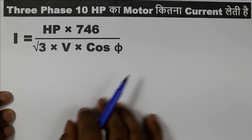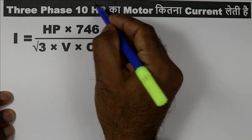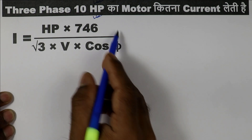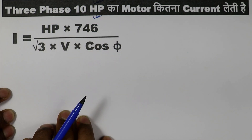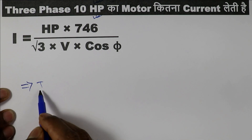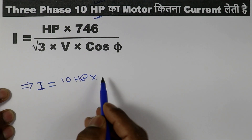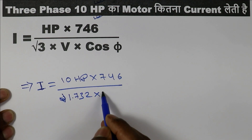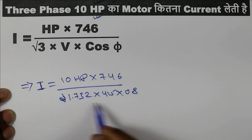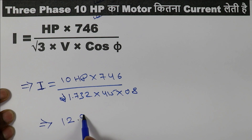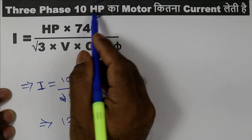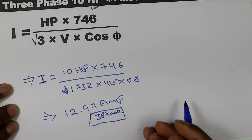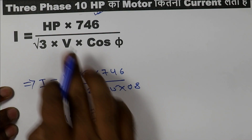Now let us move on to the horsepower question. The question is the same but in place of kilowatt, horsepower is given. For a 10 horsepower 3-phase motor, the formula becomes: 10 HP into 746, divided by root 3 (1.732), multiplied by voltage (415V), multiplied by power factor (0.8). When you solve this, the answer comes as 12.97 ampere — that is the current rating of a 10 HP 3-phase motor. We are not talking about single phase for now.